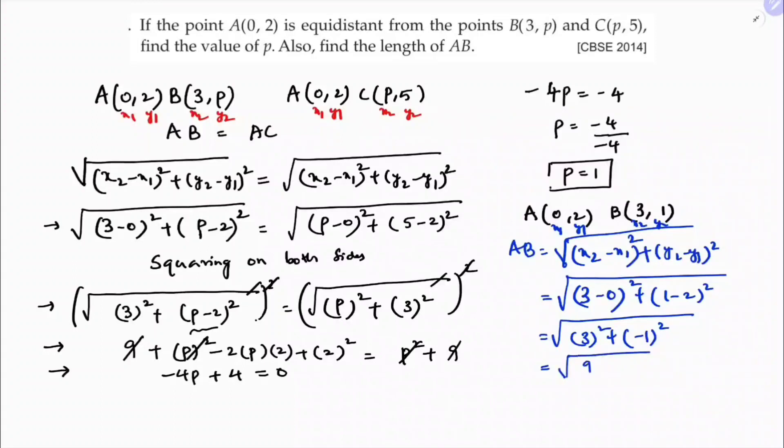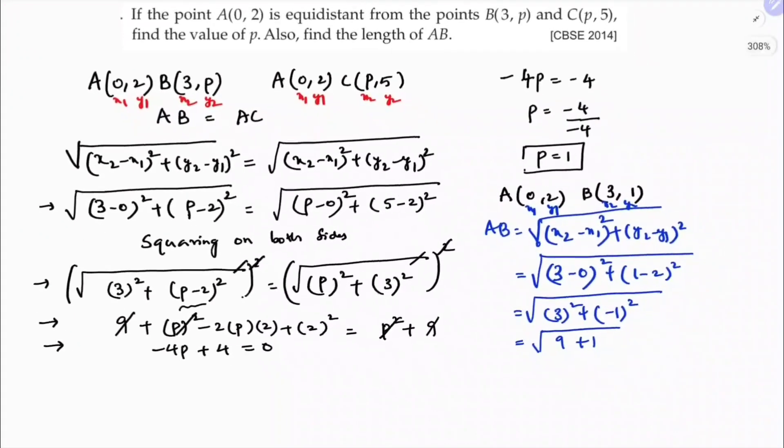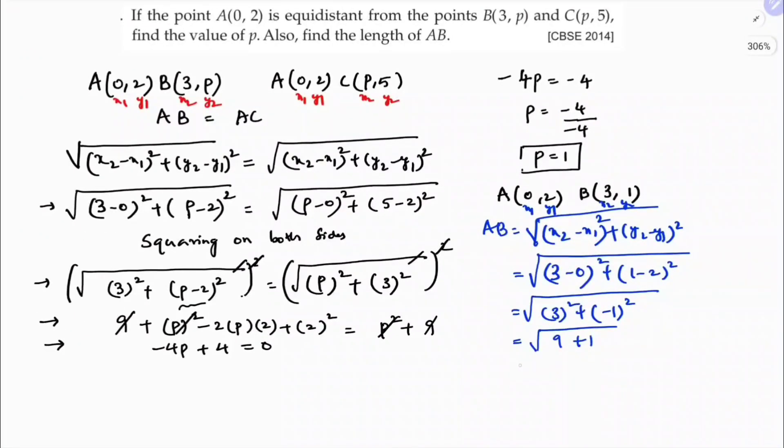So here 3 square is 9, minus 1 whole square is 1. So the answer is here root 10. So length is root 10 units.